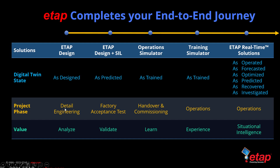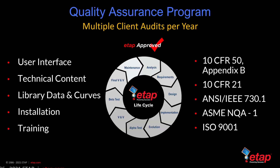ETAP lets you go from detail engineering to factory acceptance, handover commissioning, and into operations on the same platform. All of this is possible along with the quality assurance that ETAP provides. ETAP has nuclear-grade, high-impact software that allows compliance with 10 CFR 50 Appendix B and CFR Part 21 amongst other standards, and that applies to the interface, technical content, libraries, installation, as well as training.